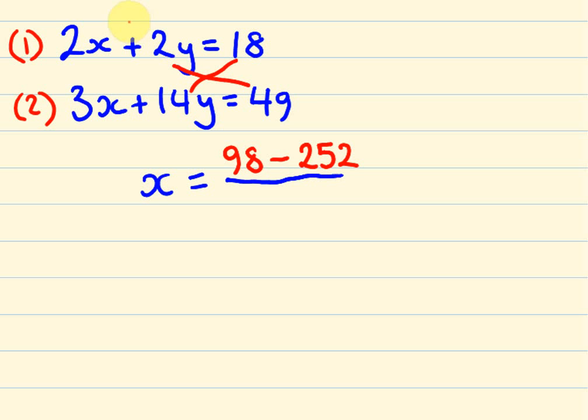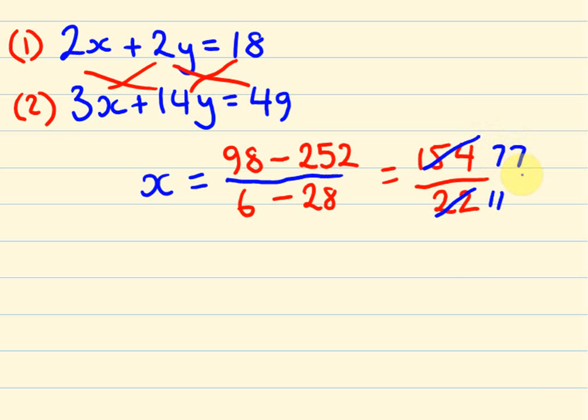What we have next is 3 times 2 is 6, and 14 times 2 which is 28. So what we're going to get, 98 take away 252, we get the answer of 154 minus. And 6 take away 28, we're going to get the answer of minus 22. We can actually cancel these two negatives out just to make it look a bit prettier. 154 divided by 22, we can even cancel it down if we want to make it a bit nicer. So this will become 11, divide both sides by 2. This side here is going to become 77. So 77 over 11.